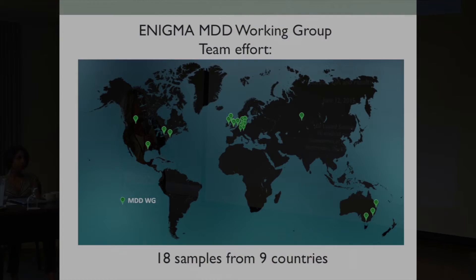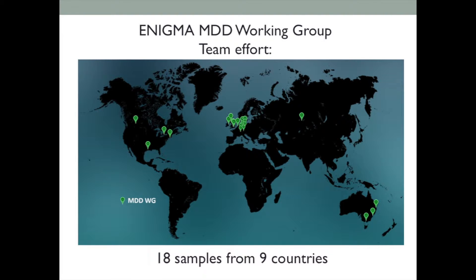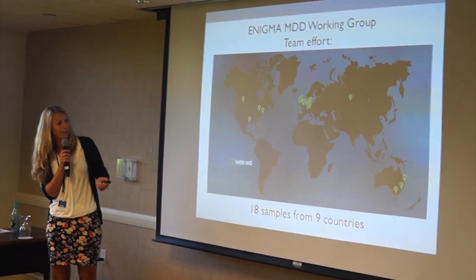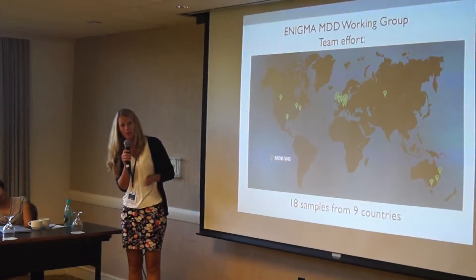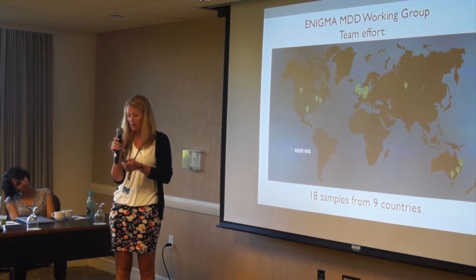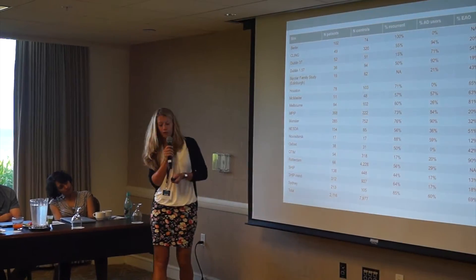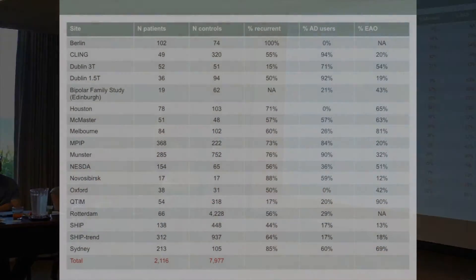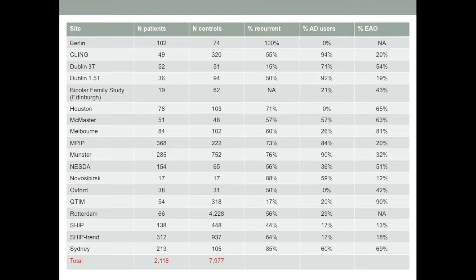Very briefly, something about the ENIGMA and LEADER working group. Currently we have 18 samples from nine different countries worldwide, quite globally distributed. As Jason asked, we have a site in Novosibirsk — quite exotic, quite proud of that one — although we are still lacking some South American and African sites. This is an overview of all the sites currently involved; most of them were also involved in the subcortical meta-analysis, but recently some new sites joined from Houston.